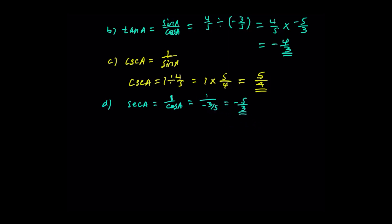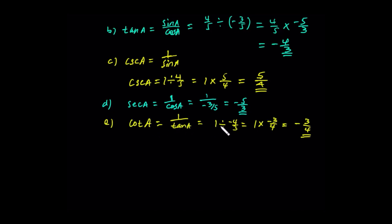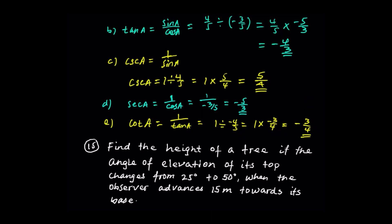For the cotangent, cot A is 1 over tangent. So cot A equals 1 over negative 4 over 3, which is 1 times negative 3 over 4, giving negative 3 over 4.